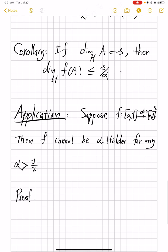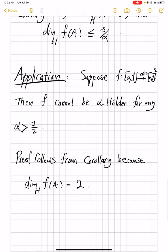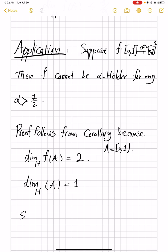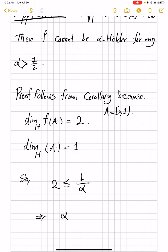The proof follows from the corollary because on the one hand, we have dimension Hausdorff of f(A) equal to 2 because it's equal to the square. And on the other hand, we have the dimension of A itself equal to 1. So here A is the unit interval. And so we have that 2, the dimension of the image, must be less than or equal to 1/alpha, which is dimension of the domain over alpha. And from which it follows that alpha is less than or equal to 1/2. That's a nice application.